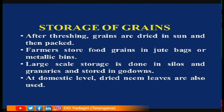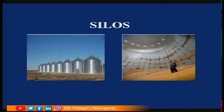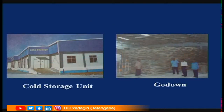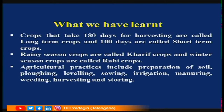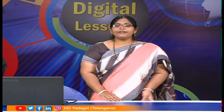These are silos where you can store food grains. This is a cold storage unit. These are godowns — you might have seen FCI (Food Corporation of India) godowns where rice, wheat, and pulses are stored. This is regarding the different types of agricultural practices.